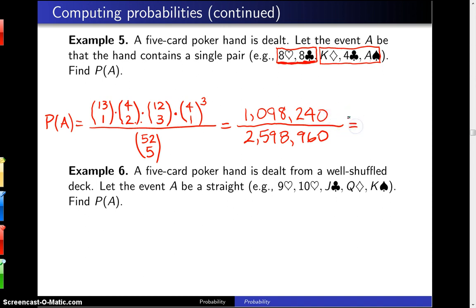And when you plug that into a calculator, that is approximately 0.4226. Now this should match intuition, which is to say this is an event that happens 42% of the time, and that kind of makes sense, because you could see quite often that a single pair will get dealt out, so this is a pretty common event.